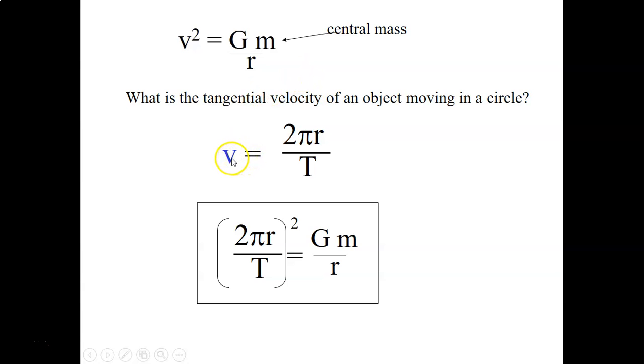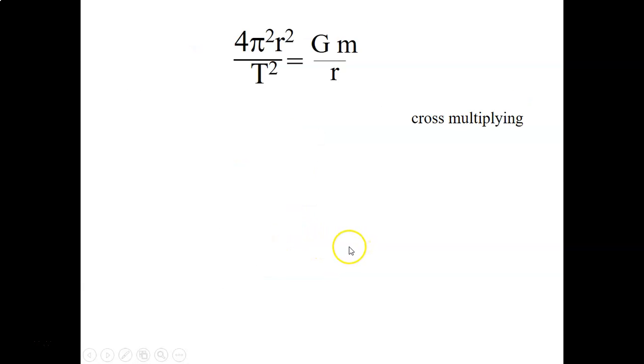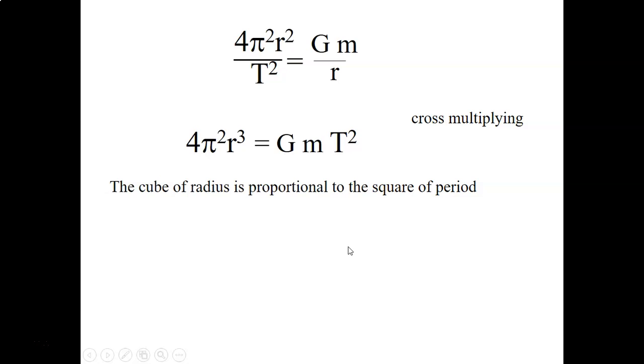Plugging in for tangential velocity equals 2 pi r over t. Remember that equation. Sticking that in for v squared. What we get is 2 pi r over t. That quantity squared equals gm over r. Doing a little bit of algebra, cross-multiplying and whatnot. We get this nasty looking equation.